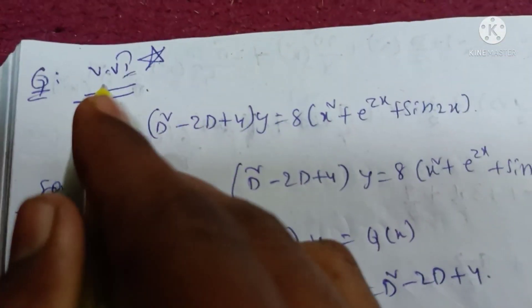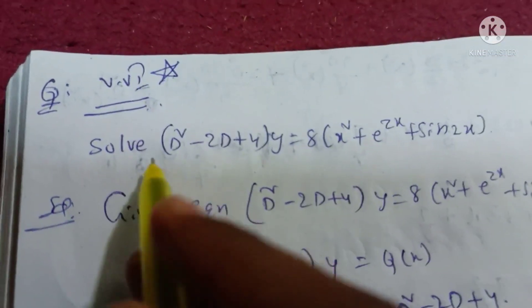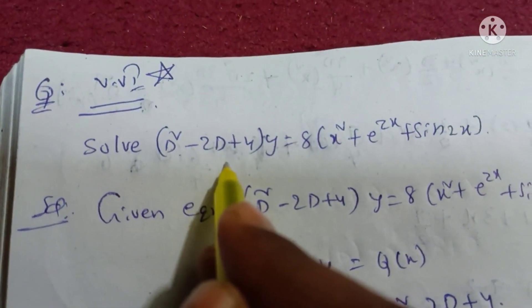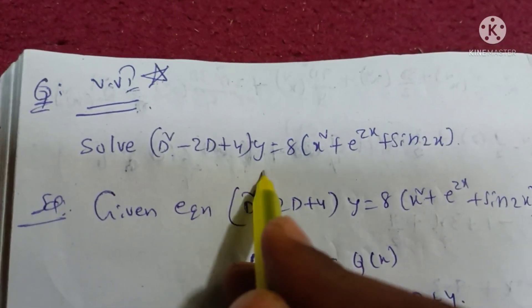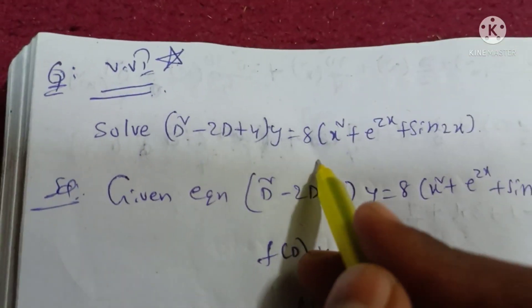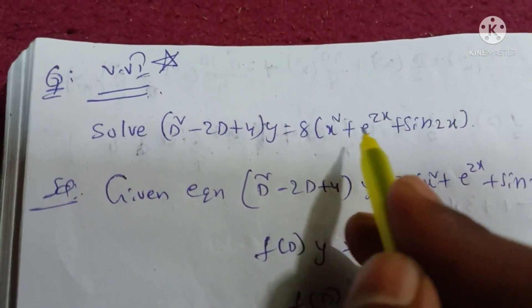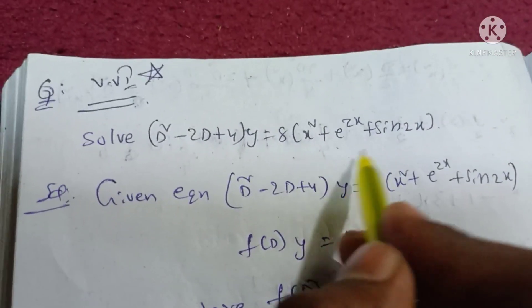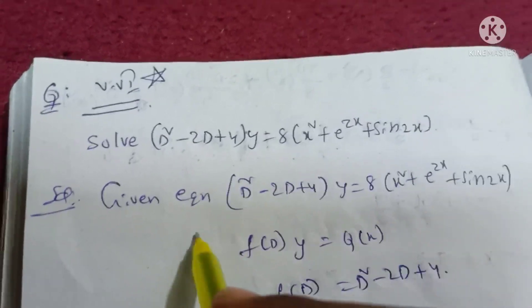Question. Very, very important question. Solve: d squared minus 2d plus 4 into y is equal to 8 into x squared plus e to the power 2x plus sin 2x.